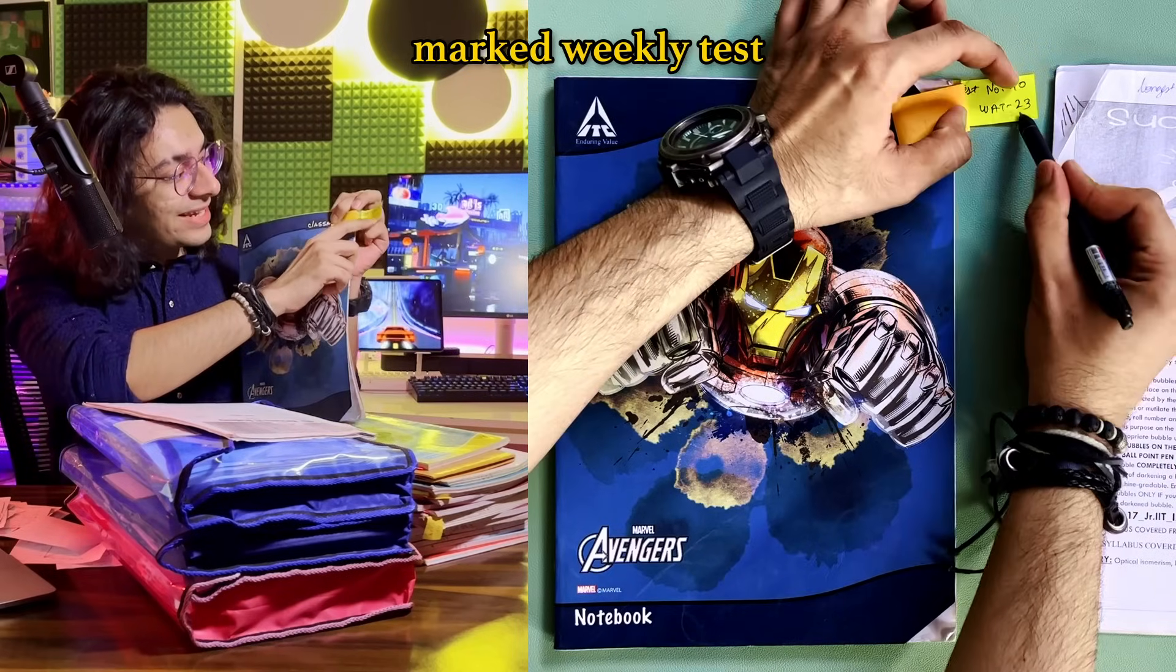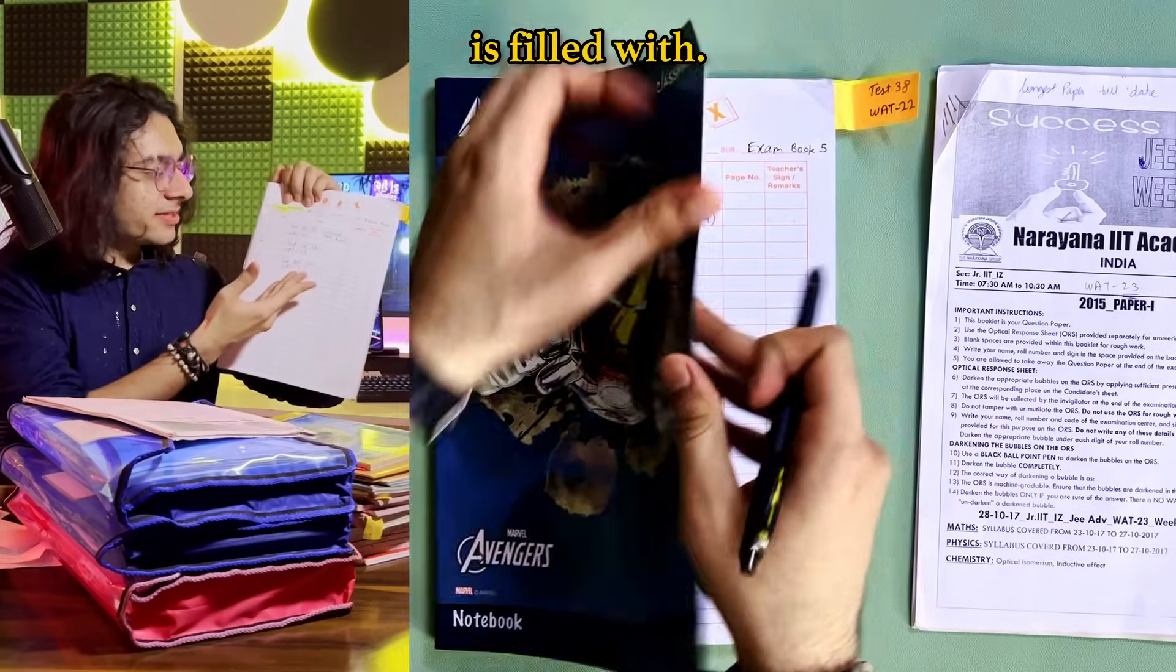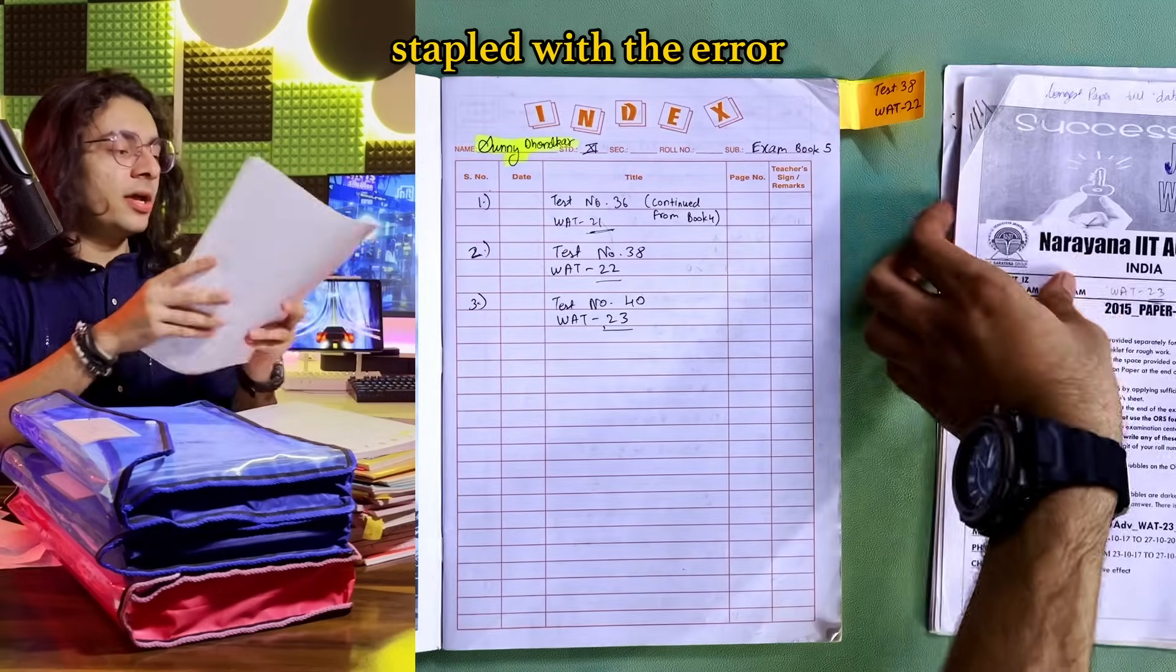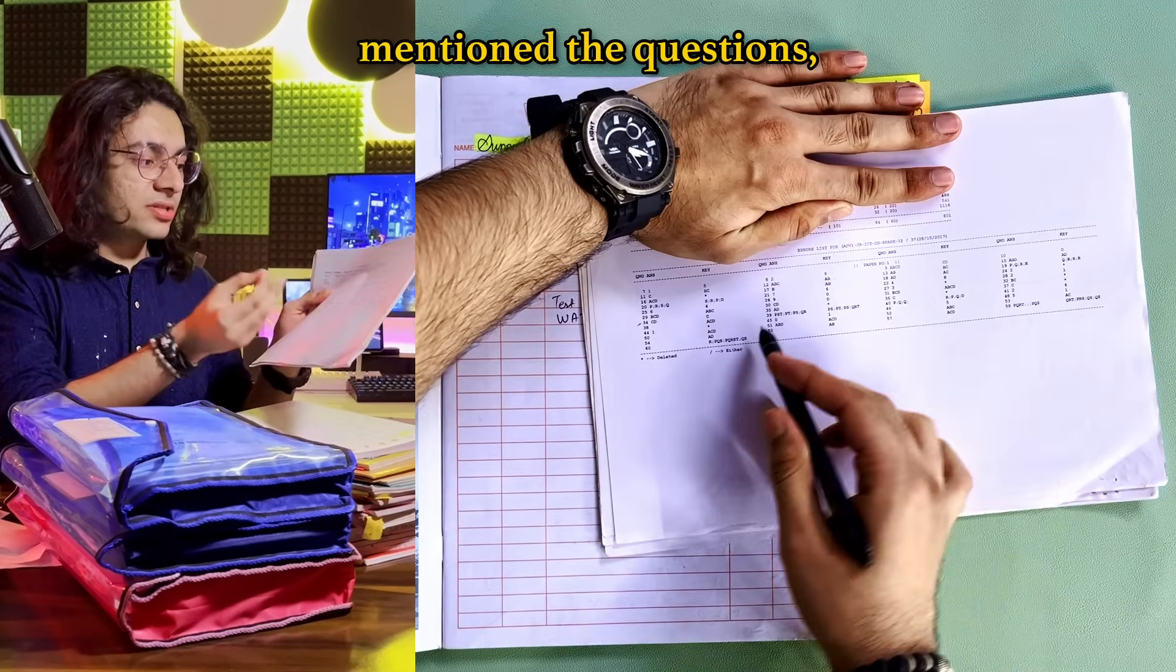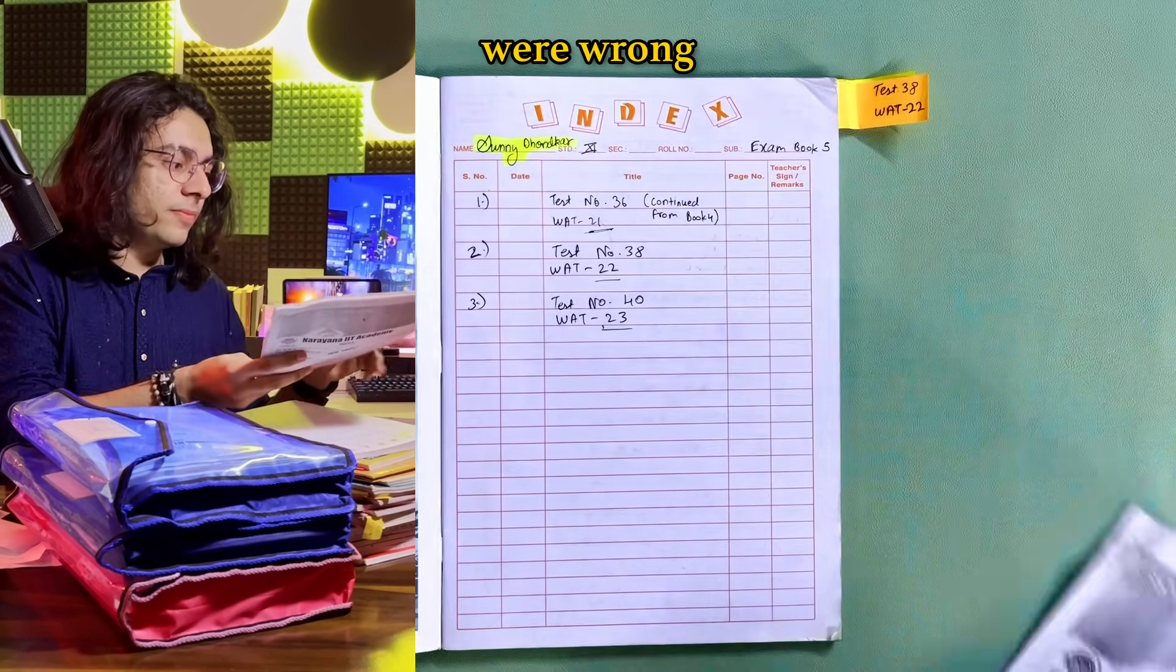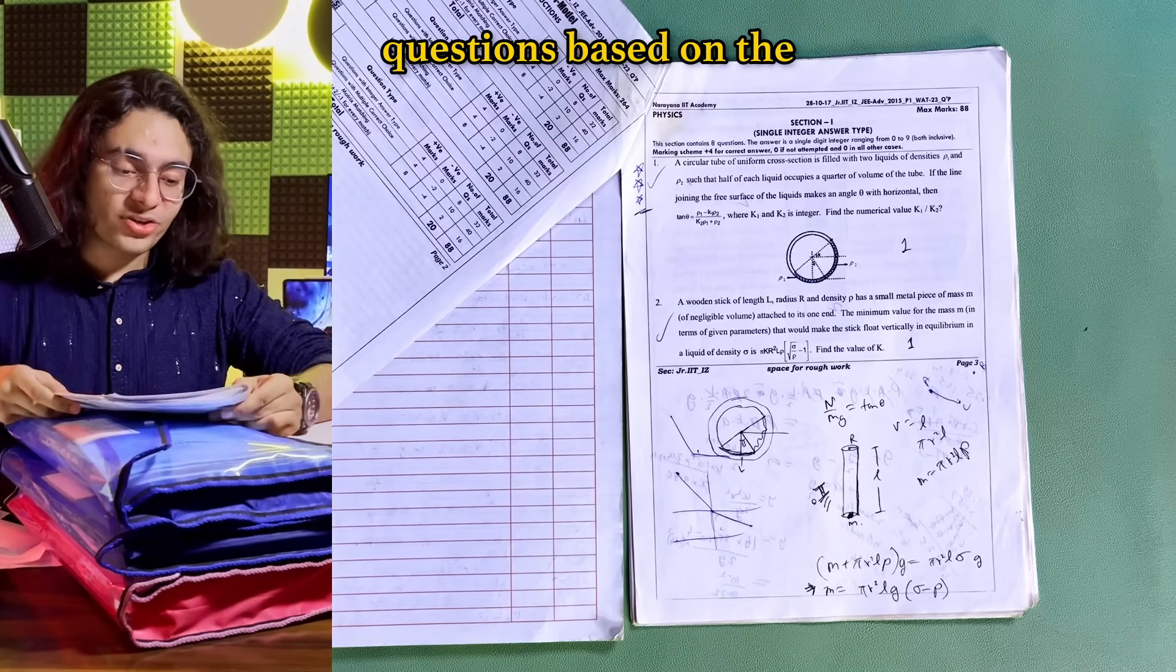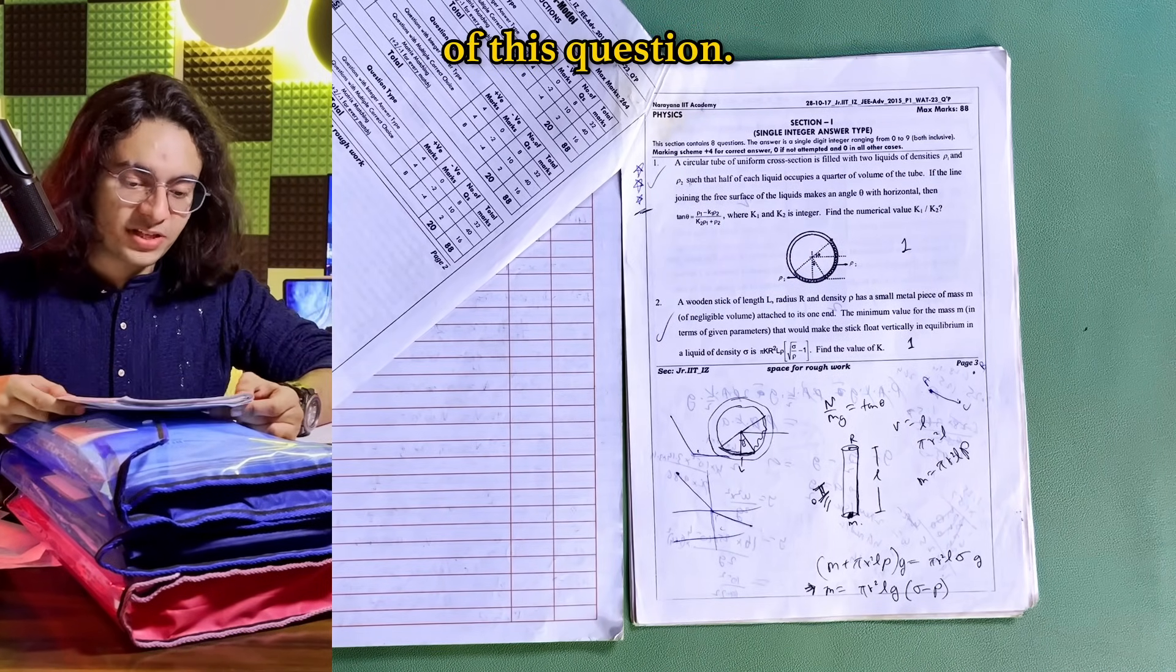Here you can see I have marked weekly test 23 which is test papers solution and even the index is filled with weekly test 21, 22 and 23 so that I can easily find it and each of these question papers is properly strapped with the error list that the coaching used to give us which mentioned the questions what were marked by me and which one of them were wrong and the answer key is strapped too. And here you can see I used to give star ratings to a lot of questions based on the complexity and difficulty of this question.